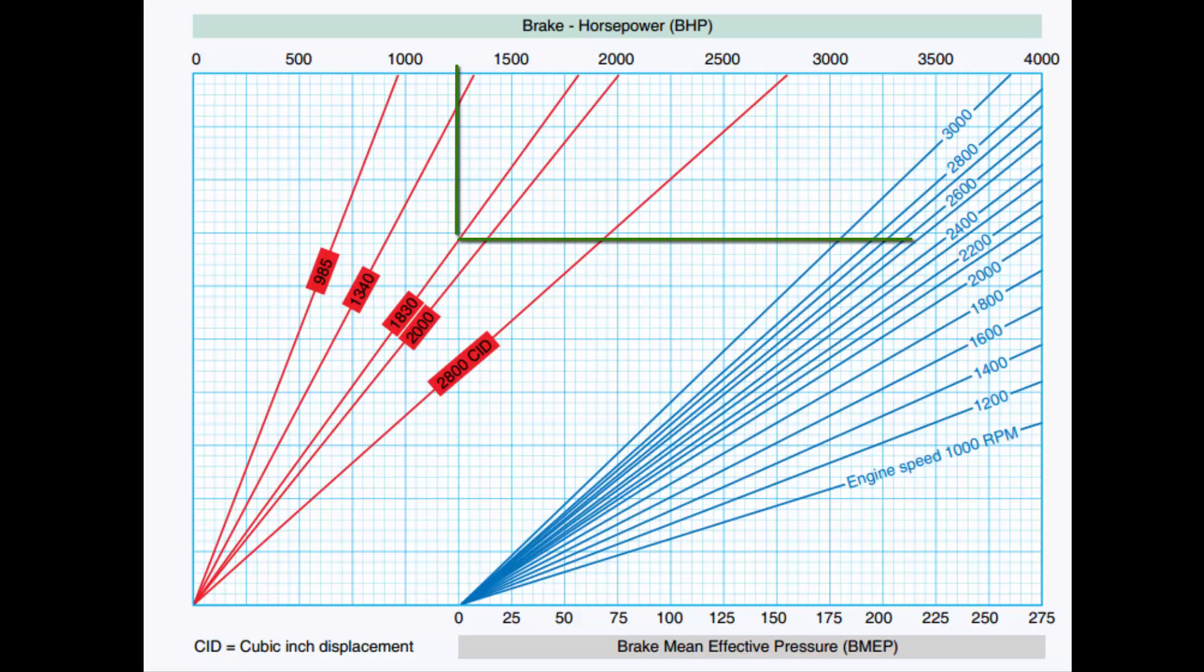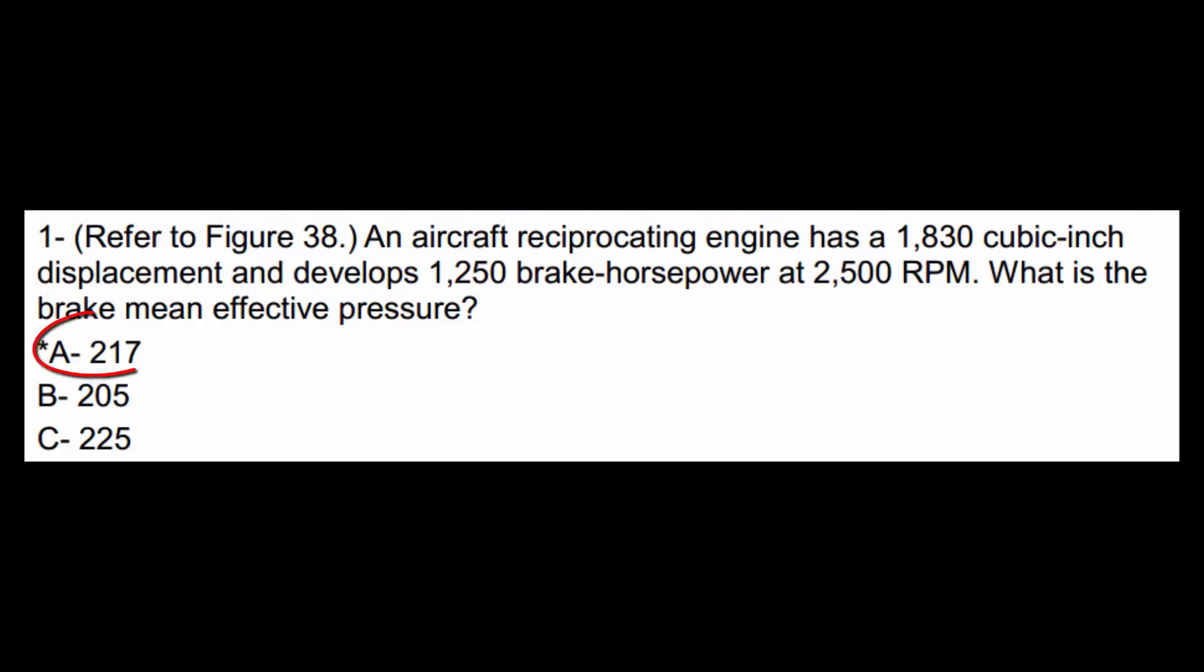And then from here, we're going to go down. And where we hit the bottom of the chart here, this is the brake mean effective pressure numbers at the bottom. And we'll find that it intersects the bottom here at somewhere around the 217 line. So the answer to this question is A, 217.